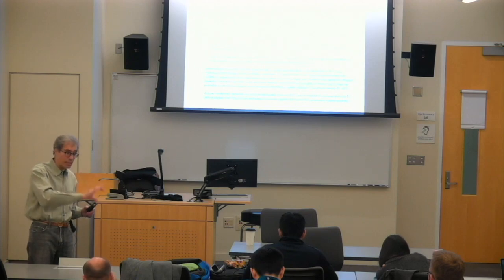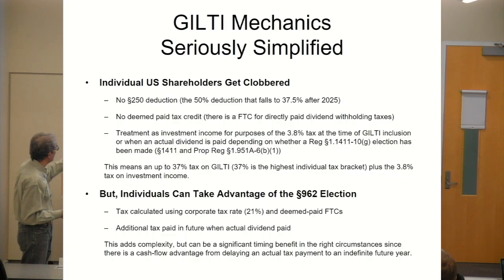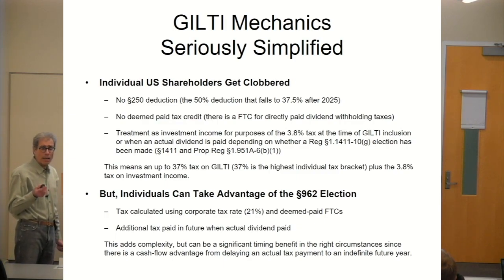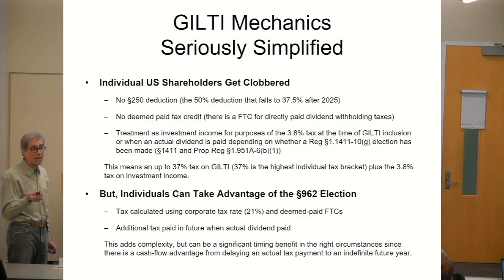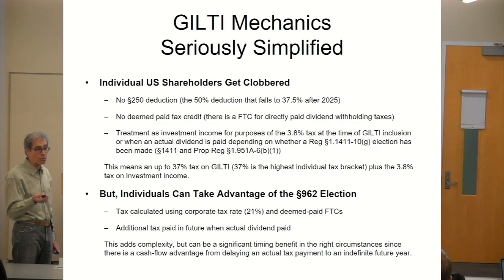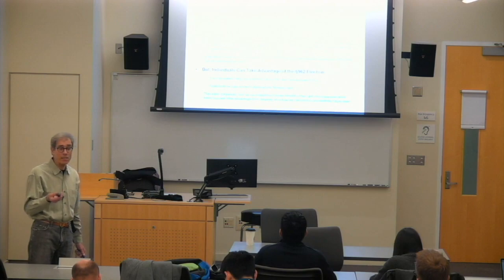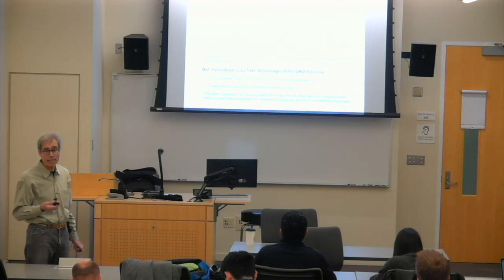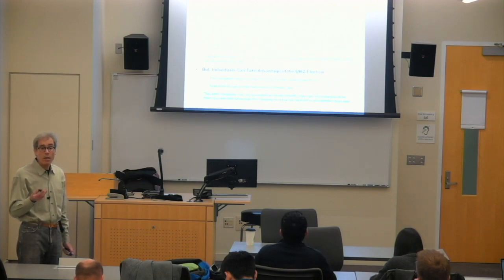Individual shareholders get clobbered — they have to include any income from GILTI if they're a 10% or greater shareholder, but they do not get the Section 250 deduction. Only corporate shareholders get that. And secondly, they do not get any benefit from foreign tax credits. There is some important benefit to a corporate shareholder of taking the foreign tax credit.